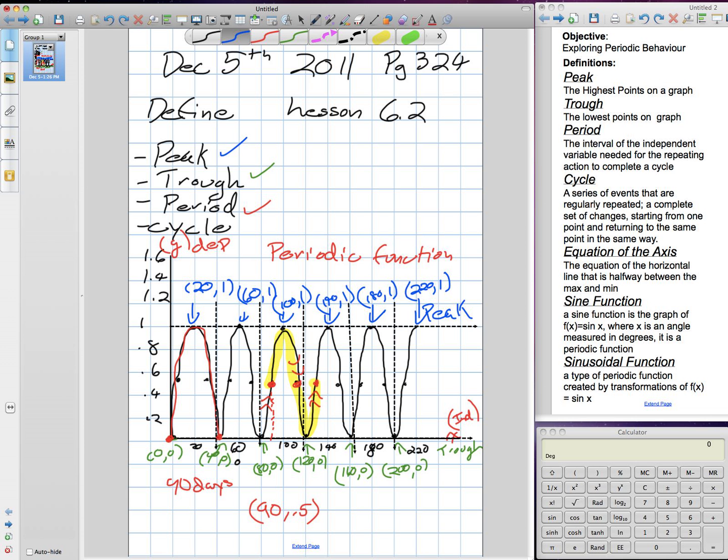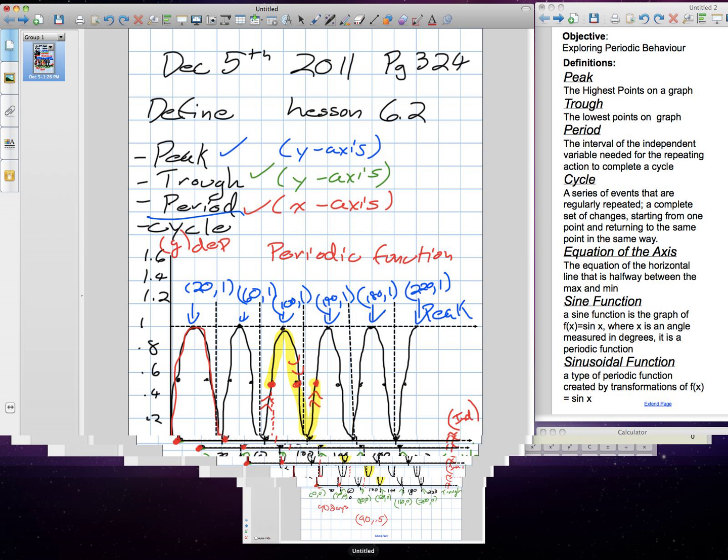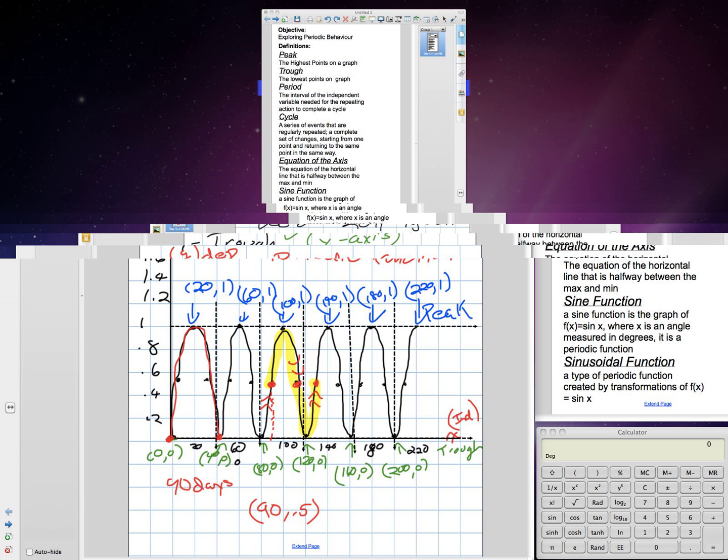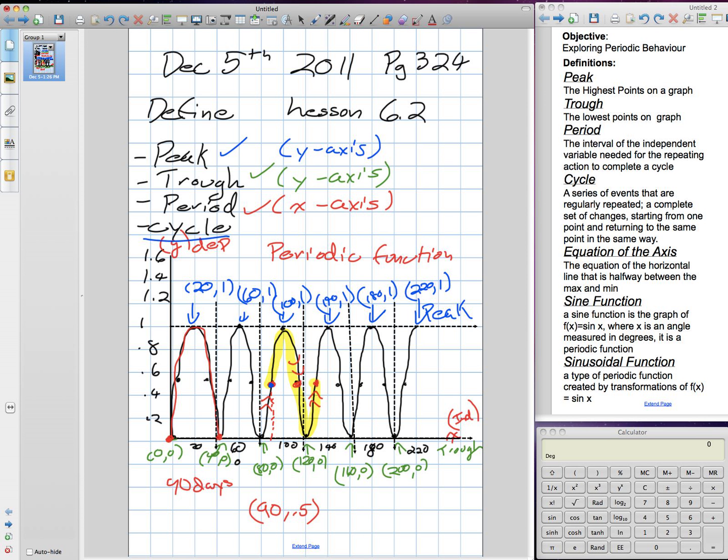A period can start and end anywhere along the function. We just have to figure out how long it takes to complete that period. The three things we've talked about now are a peak, which deals with our y-axis; a trough, which also deals with our y-axis; and period deals with the x-axis. We measure along the x-axis to figure out a period. Now the last thing we want to talk about is a cycle. A cycle is essentially the distance of a period.